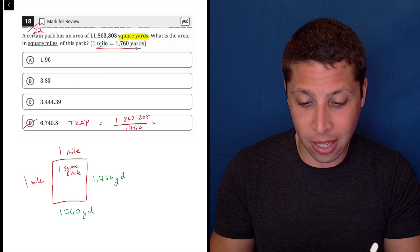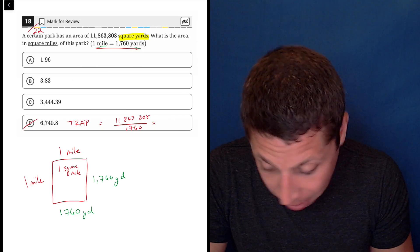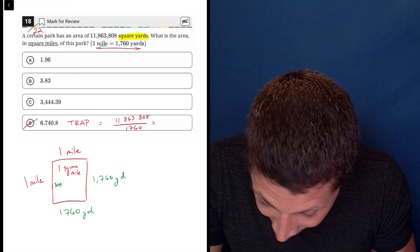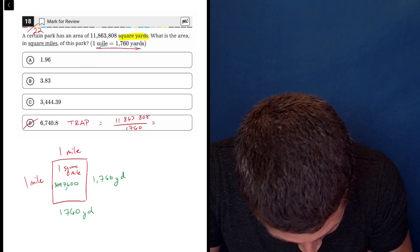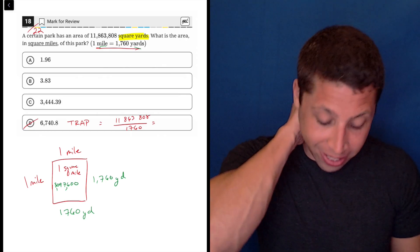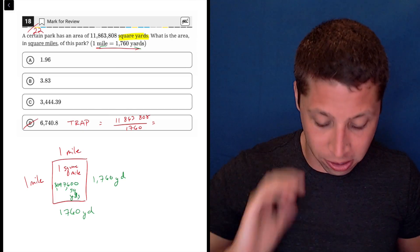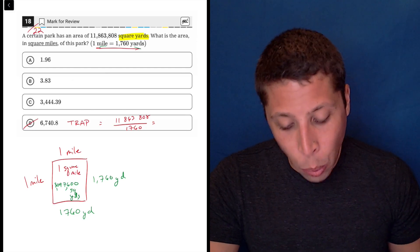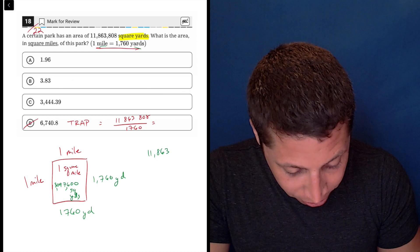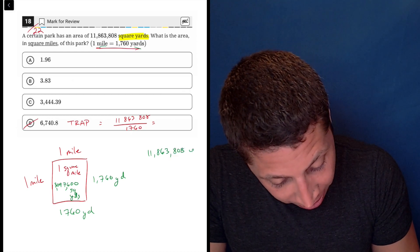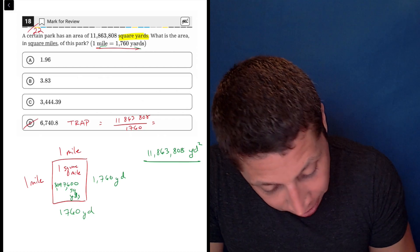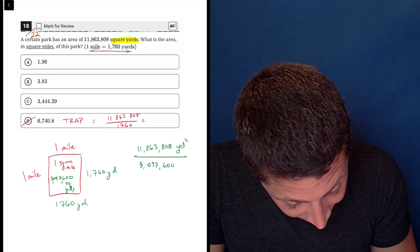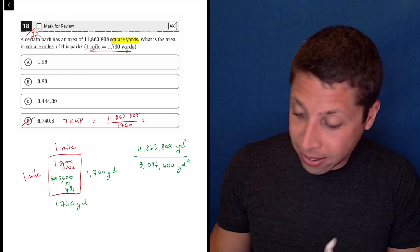So 1760 times 1760 is, oh boy, I'm not even going to be able to write it in the box. Let's see, 3,097,600. So that's, just to be clear, 3,097,600 square yards. So very different than the conversion that they gave us originally. That's the number we need to use. We need to take our 11,863,808 square yards, I'll write it like this, and divide it by one square mile, which is 3,097,600 square yards, and that's going to give us our answer.